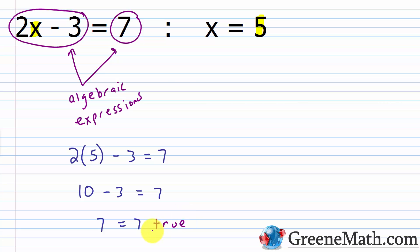Now, if you plug something in for the variable and it's not the correct solution, you will not get a true statement. So let's say that I said that x was 4 as an example. 2 times 4 is 8. 8 minus 3 is 5. 5 does not equal 7. So this would be false.